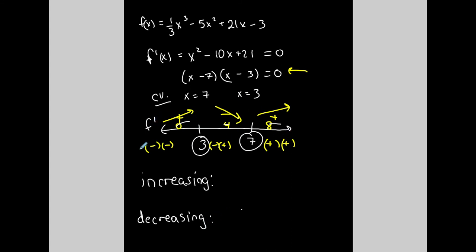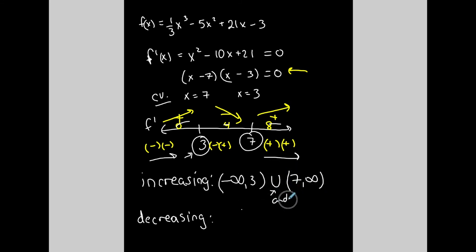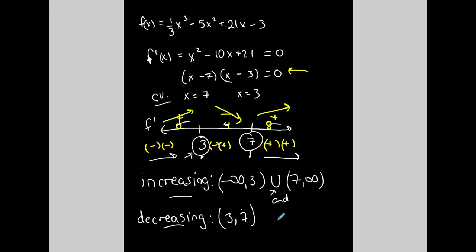In interval notation: where is this function increasing? From negative infinity to 3, and also from 7 to infinity. The union symbol means 'and' — this interval and this interval is where it's increasing. Where is it decreasing? It starts decreasing at 3 and continues until it reaches 7. Notice it's all parentheses — always open intervals for increasing and decreasing. Only the critical values on the bottom of the number line go into the intervals.